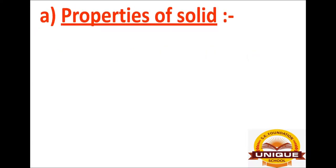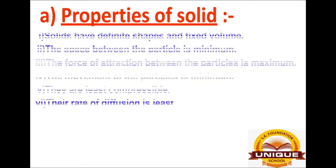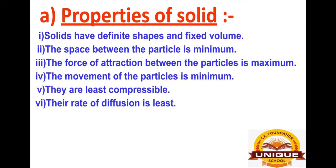Starting with the first point: solids. Solids have a defined shape and fixed volume. The characteristic properties of solids are: they have a defined shape, a fixed volume, minimum space between particles, very high attraction between particles, minimum movement between particles, and they are least compressible. The rate of diffusion is also least in solids.